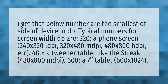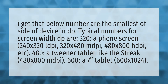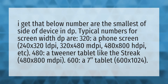The below numbers are the smallest side of a device in DP. Typical numbers for screen width in DP are: 320 for a phone screen — 240 by 320 LDPI, 320 by 480 MDPI, 480 by 800 HDPI, etc.